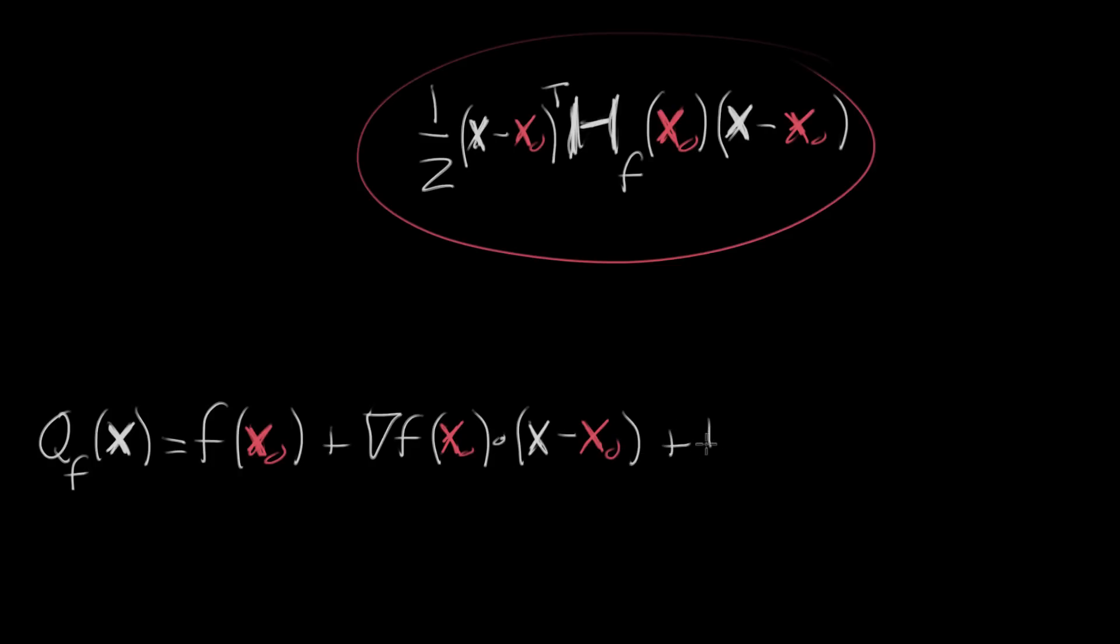plus one-half the, and we'll just copy down this whole quadratic term up there, the variable minus the constant, multiplied by the Hessian, which is like an extension of the second derivative to multi-variable functions, and we're evaluating it at the constant x naught, and then on the right side, we're multiplying it by the variable, x minus x naught.